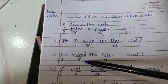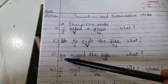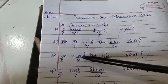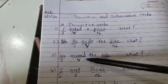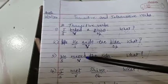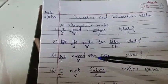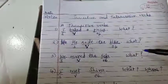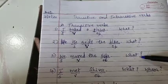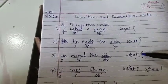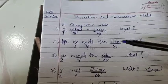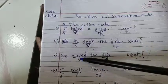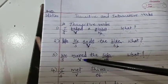The third sentence: We moved the sofa. If I say 'we moved' and stop, you would ask: what did you move? The answer is 'sofa,' which is the object. The verb needed an object, so it is a transitive verb.